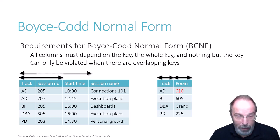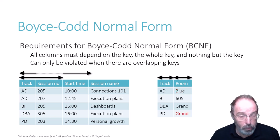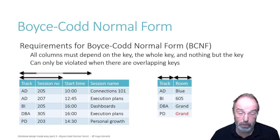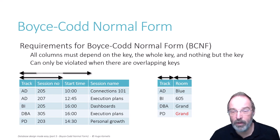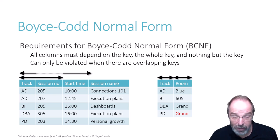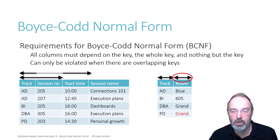And we can still try to reassign session PD203 to the grant room by reassigning the PD track to the grant room. But now you see that there are two tracks in the same room, which is not allowed by the business rules, and it's also prevented by the key constraint on the room column. So the database helps us protect against violations — exactly what we wanted and exactly why we want to go to Boyce-Codd Normal Form.